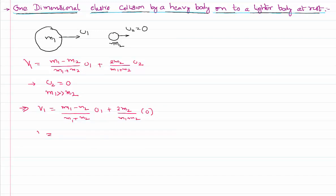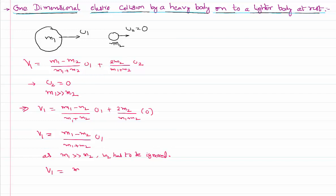The second term becomes 0, so v1 becomes simply (m1 − m2)/(m1 + m2) × u1. Again applying the condition that m1 is very much greater than m2 — when compared with m1, m2 can be ignored. If I ignore m2 in both numerator and denominator, I get m1/m1, which cancels. It is approximately equal to u1 itself.